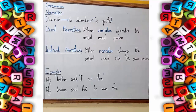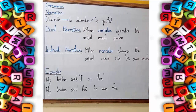Let's understand this with the help of an activity. I will exemplify direct and indirect narration with the help of an activity. For that activity, I want you to call for either your brother or sister, whoever is available around you. I can wait for you to call your brother so that we can do this activity and fully understand what direct narration and indirect narration are.